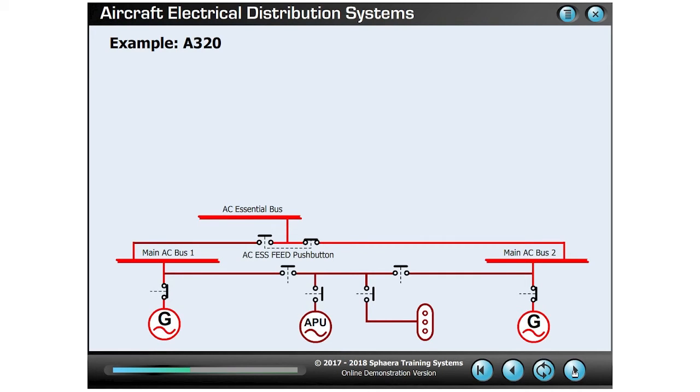In the unlikely event that all main generators fail, emergency power is automatically supplied by the emergency generator. Power for this generator comes from the hydraulic system.